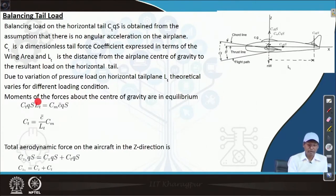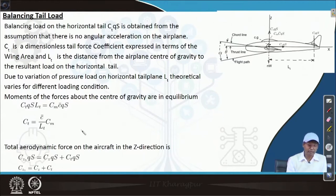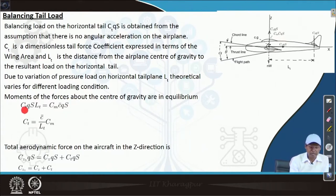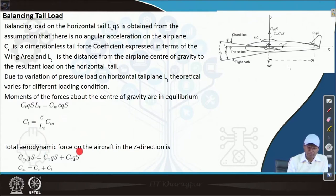The moments of forces about the center of gravity are in equilibrium. Equating Cm_alpha · c-bar · q · S = Ct · q · S · lt, we get Ct = c-bar · Cm / lt. The total aerodynamic force on the aircraft in the z direction is then Cz_total = Cz + Ct.